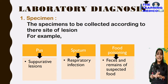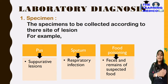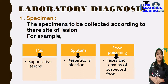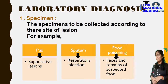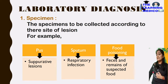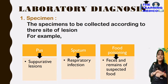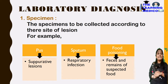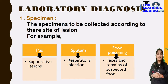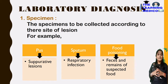Lab diagnosis is very important. Specimen collection depends upon the site of lesion. If the patient has a respiratory problem, we take sputum. For skin infections, we take samples from the suppurative lesions. In food poisoning cases, we take the patient's feces and the remains of the suspected food particles.